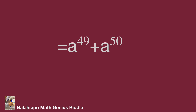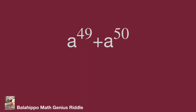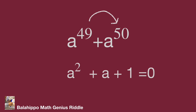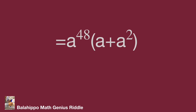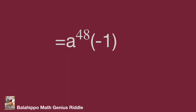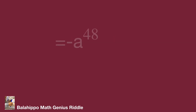Next step, let's handle a power of 49 plus a power of 50. These two items also have powers differing by 1, same as the pattern for a squared plus a plus 1. Adjust a squared plus a plus 1 equal to zero to get a squared plus a equal to minus one. Then change a power of 49 plus a power of 50 to become a power of 48 multiplied by the quantity a plus a squared. Substitute a squared plus a by minus one, and it becomes a power of 48 times minus one, equal to minus a power of 48.